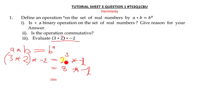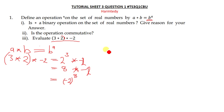Now we compute 8 star negative 2. Using the formula, this equals negative 2 raised to the power 8. Since 8 is an even number, the answer is positive. Two raised to the power 8 gives 256. So the final answer is 256.